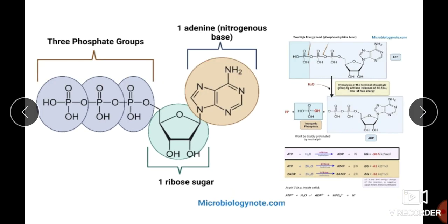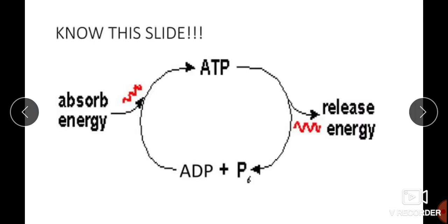ATP is a very high-energy compound. During formation of ATP, it is formed from ADP and one inorganic phosphate. This reaction is called phosphorylation, which takes place with the help of an enzyme called kinase. During this formation of ATP, energy is absorbed. Once ATP is formed, it gets hydrolyzed by ATPase and releases energy.